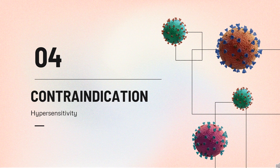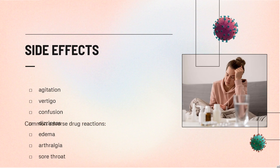What is valaciclovir used for? Valaciclovir is a nucleoside analog DNA polymerase inhibitor indicated for adults for: cold sores and herpes labialis; genital herpes — treatment of genital herpes lesions in immunocompetent patients (initial or recurrent episode); suppression of genital herpes lesions in immunocompetent or HIV-infected patients; reduction of viral transmission; and herpes zoster. Pediatric patients: cold sores, herpes labialis, and chickenpox.